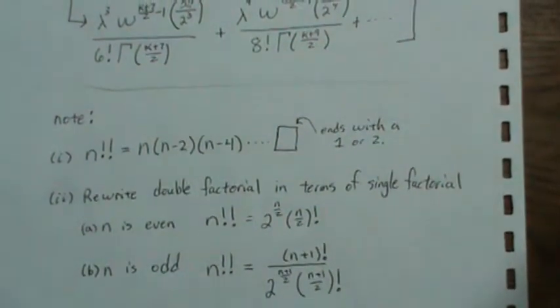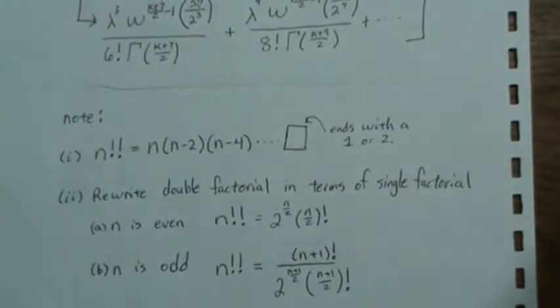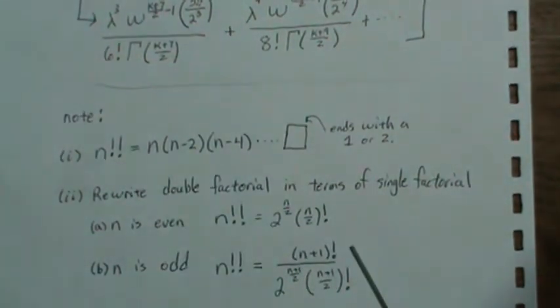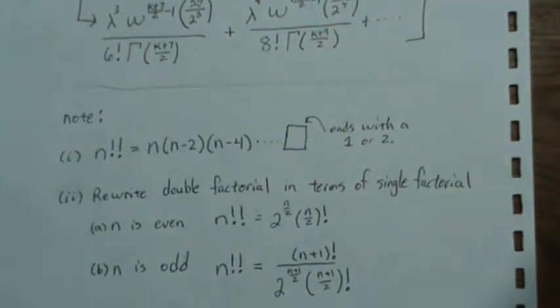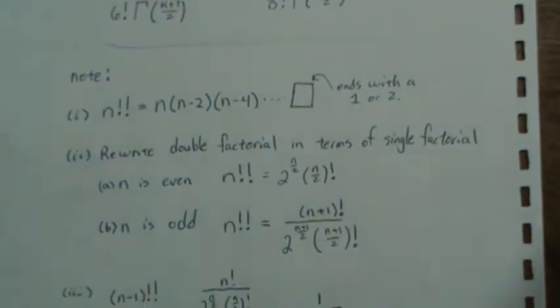And if n is odd it can be rewritten as this. n plus 1 factorial over this here. So how does that help us?